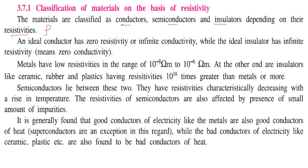An ideal conductor has zero resistivity or infinite conductivity. If it has infinite resistivity, that means it has zero conductivity. For an ideal conductor: zero resistivity and infinite conductivity. While the ideal insulator has infinite resistivity, that is zero conductivity.